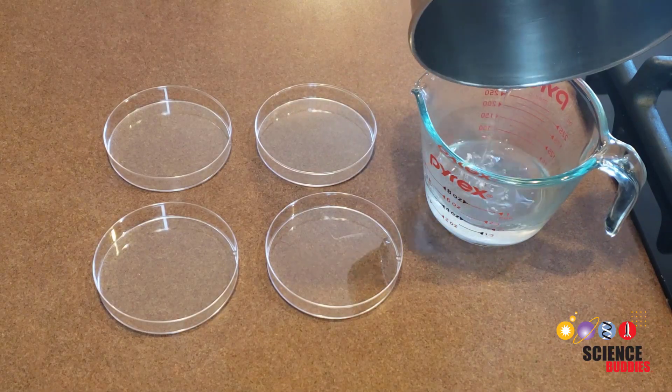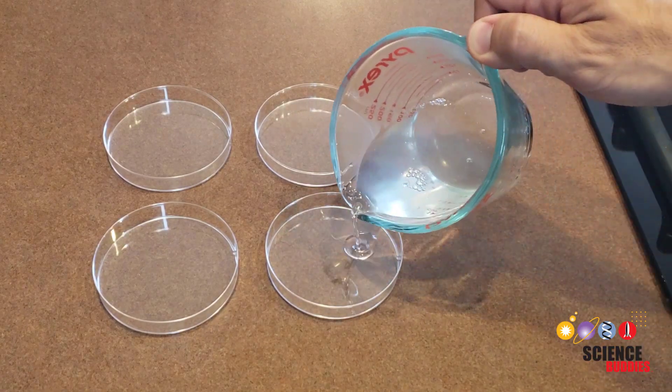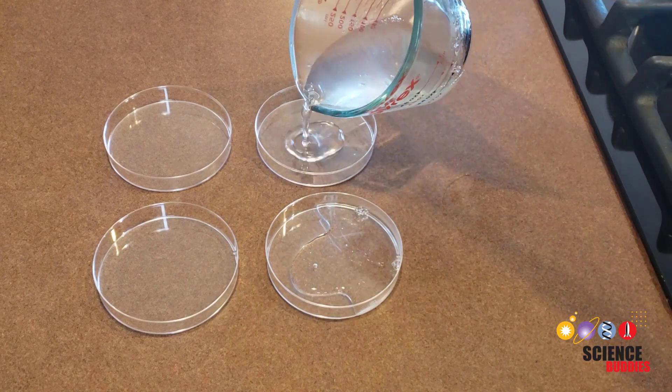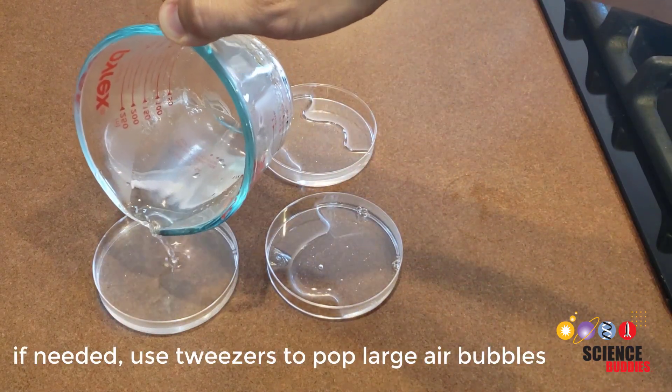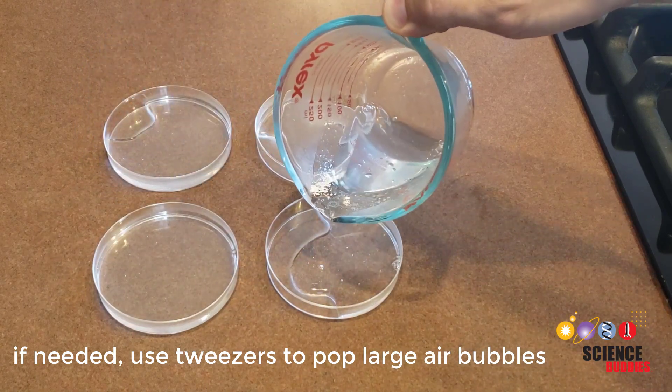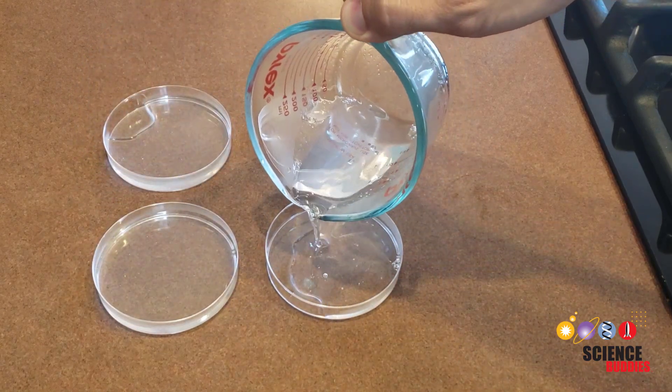Next, pour the cooled solution into petri dishes. You should have enough to fill four petri dishes about halfway. Make sure the liquid expands to fill the entire dish. You can rotate or jiggle the petri dishes slightly if necessary.